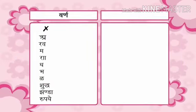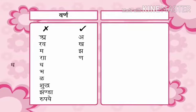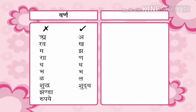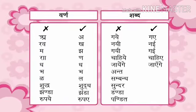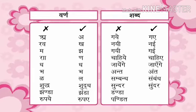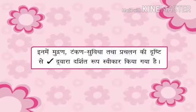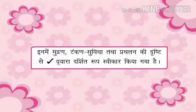Jaise varn: a, kha, jha, n, dha, bha, la — shuddh; jhanda, rupel; gai, nai — gai, chahiye, jayenge, ant, sambandh, sundar — sundar, danda, pandit, mudran, tankar, suvitha. Tatha prachalin ki drishti se sahi, dvaara darshit roop svikar kiya gaya hai.